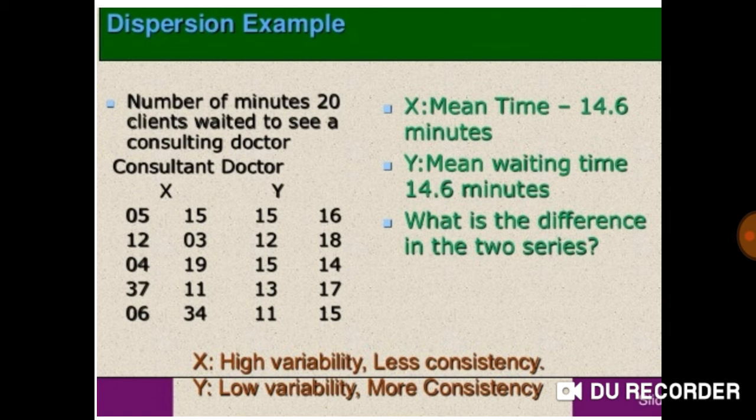X mean time minus 14.6 minutes. Y mean waiting time 14.6 minutes. What is the difference in two series? X: high variability, less consistency. Y: low variability, more consistency.